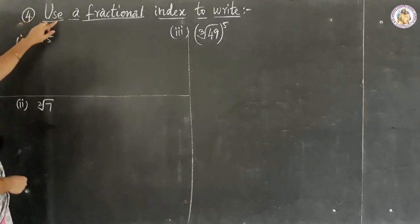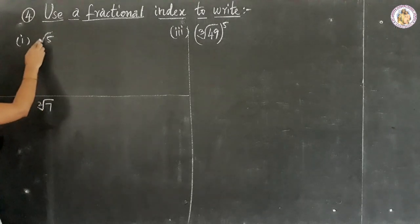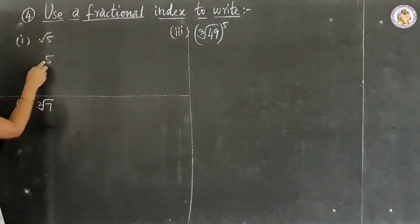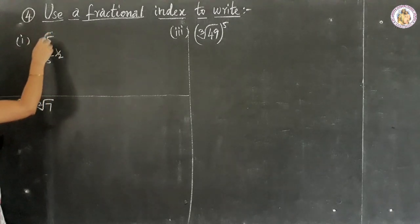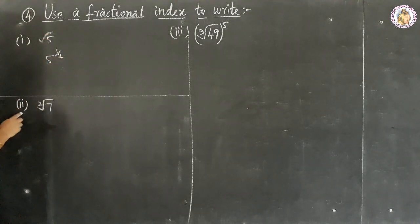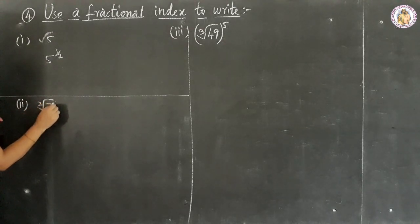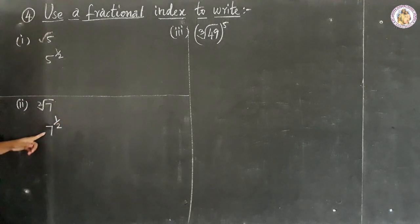Question number 4: use the fractional index to write. Sub-question 1: the square root of 5. The square root of 5 is nothing but 5 to the power of 1 by 2. Sub-question 2: 2 root 7 (the square root of 7). So the square root of 7 is 7 to the power of 1 by 2.